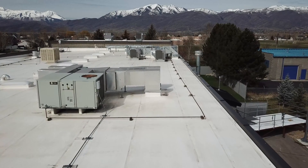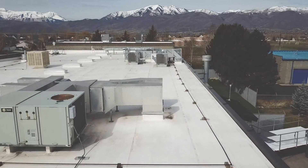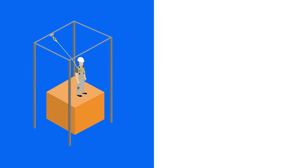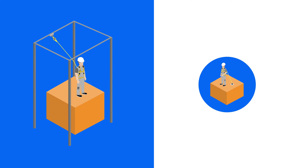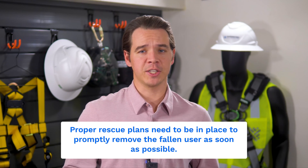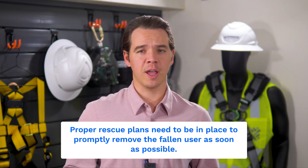Fourth in the hierarchy are active fall arrest systems. When the job site or work being performed doesn't allow for the use of a passive or travel restraint system, active fall arrest is the next option. This is less favorable than travel restraint because, while travel restraint prevents a fall from happening, fall arrest is meant to stop a fall that has already taken place. While the user will be protected from the full fall, it is still dangerous, and proper rescue plans need to be in place to promptly remove the fallen worker.